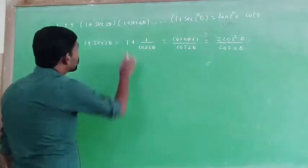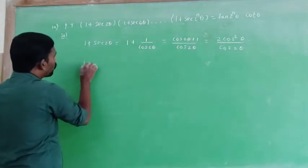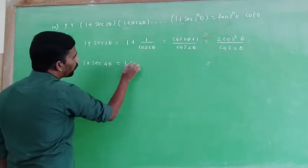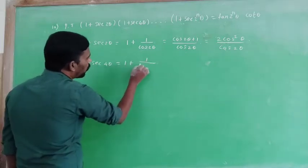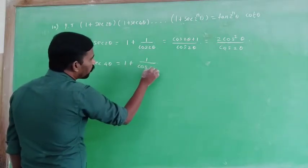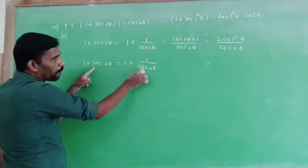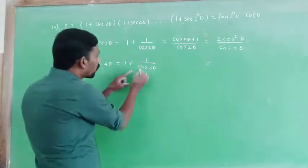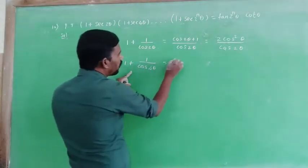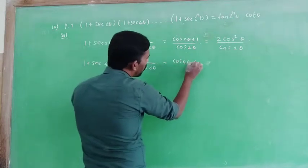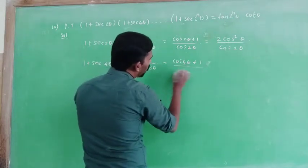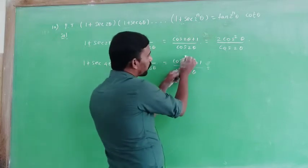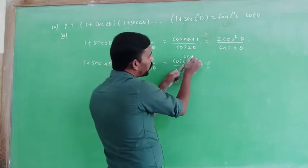Next step: consider 1 + sec 4θ. Similarly, 1 + sec 4θ = 1 + 1/cos 4θ. Writing 4θ as 2 × 2θ, we apply the same format.